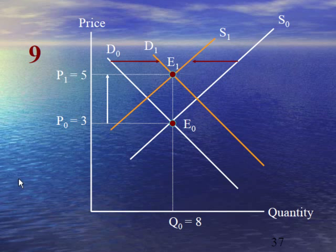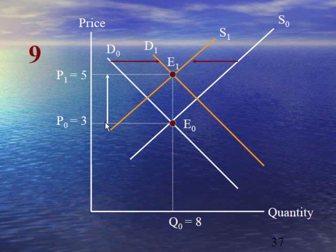Case number 9 explains that there is a decrease in supply from S₀ to S₁ and an increase in demand from D₀ to D₁. When rise in demand is equal to fall in supply, the equilibrium quantity will remain the same and equilibrium price will increase from 3 to 5. This is a bigger jump due to the double shortage in the market — one shortage is due to increase in demand and the other is due to fall in supply.